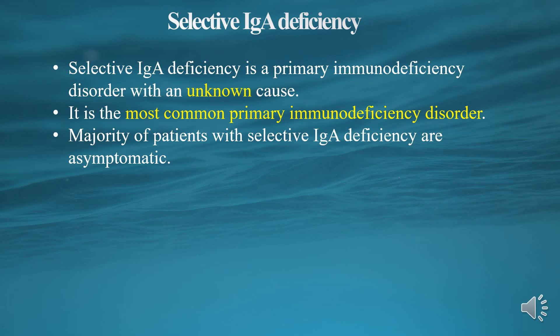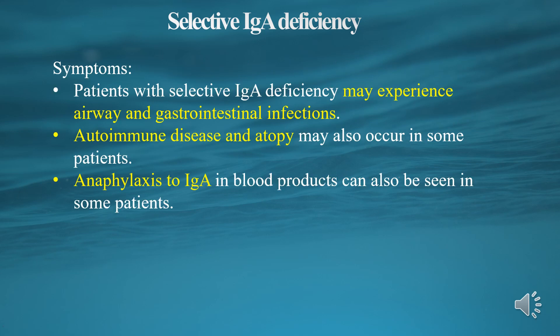The majority of patients with selective IGA deficiency are asymptomatic. Patients may experience airway and gastrointestinal infections. Autoimmune disease and atopy may also occur in some patients. Anaphylaxis to IGA in blood products can also be seen in some patients.